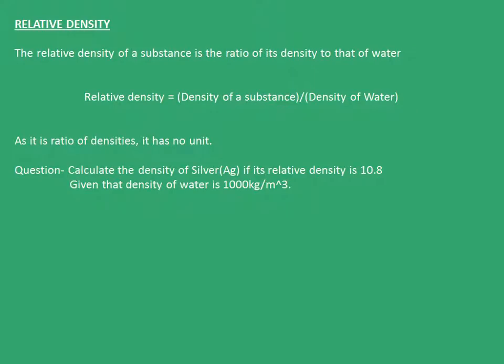This brings us to the last topic of this chapter: relative density. Relative density of a substance is the ratio of its density to that of water. So relative density = (density of substance)/(density of water). As this is a ratio, it has no unit.